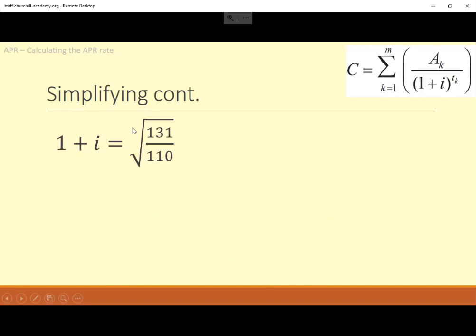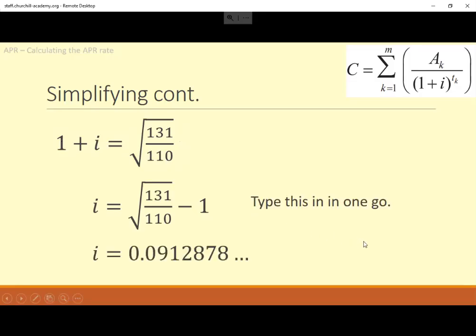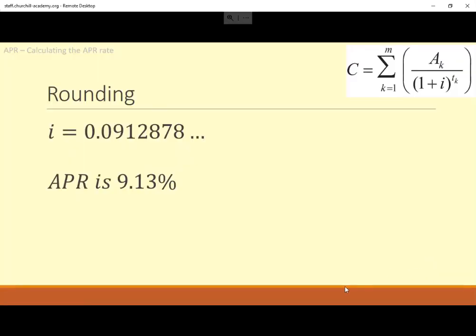1 plus I is whatever that comes out. I know that looks awkward, but it is just a number. So 1 plus I is that. I just don't want that 1 there. So we can take away that 1. And then you just type it in. 0.0912878... there were more things there. So as a percentage, 0.091287 is 9.13%. And I think two decimal places seems reasonable here.